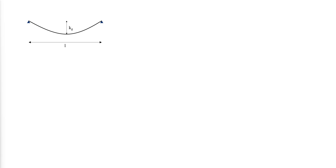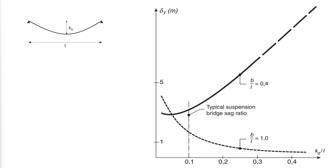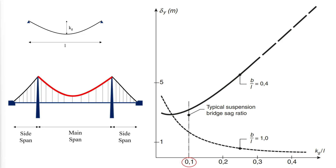The importance of considering non-uniform live load becomes very clear when the mid-span deflection is plotted against the sag ratio. If only uniform live load over the entire span was considered — as suggested by beam experience — it would be concluded that the sag should be chosen as large as possible to give the smallest deflection. However, when considering the non-uniform case with B/L = 0.4, the opposite conclusion is reached: the deflection starts to grow significantly when the sag ratio goes beyond 0.1. This is one of the main reasons for choosing a sag ratio between 1/9 and 1/11 for the main span cable in a suspension bridge.